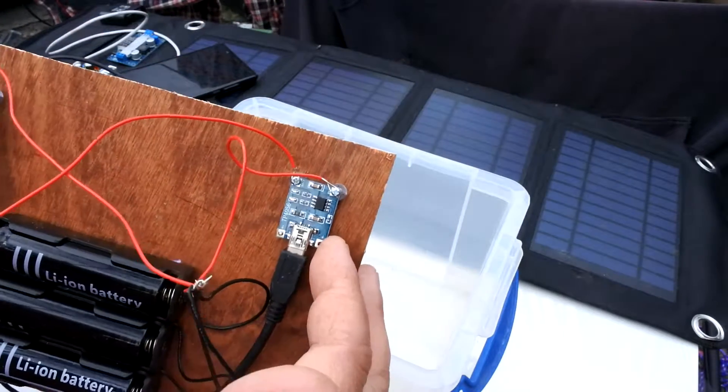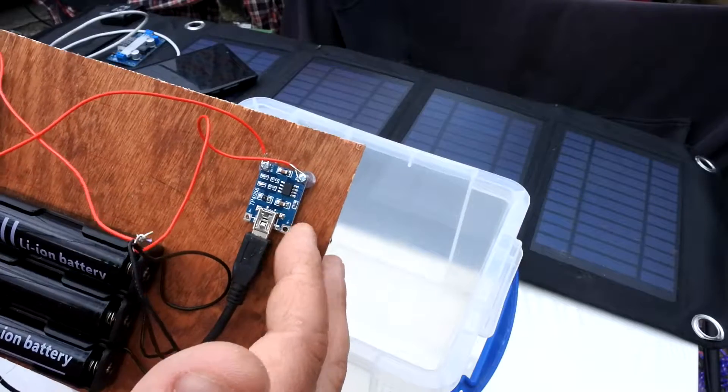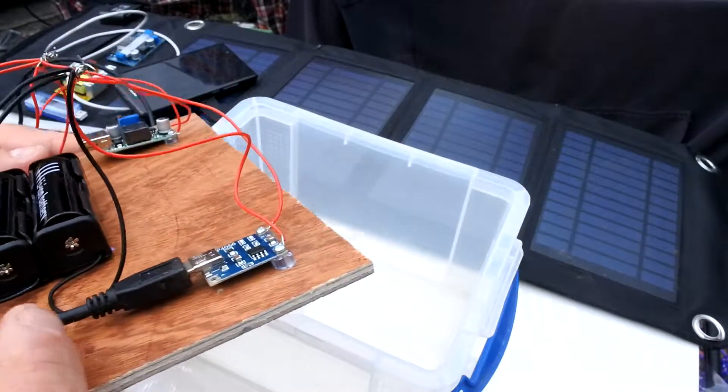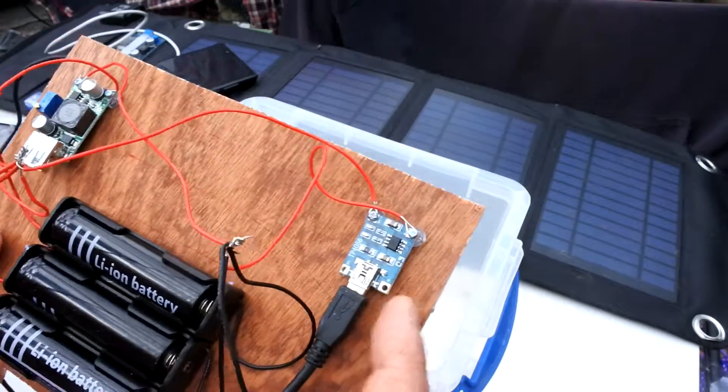So I have a TP4056 USB charge controller here. It uses mini USB as opposed to micro or even better still type C USB, so I'm assuming this is a few generations old.